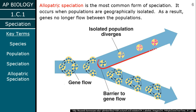Allopatric speciation is when a population gets geographically isolated — they're in different places. Imagine taking some humans and putting them on an island where no boats ever go. They're going to start to act differently from humans who interact with other people. You're taking a group of organisms of that species and putting them in a different place, so they're geographically isolated.